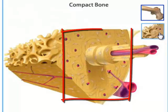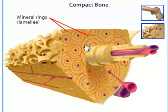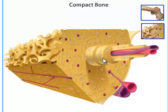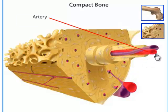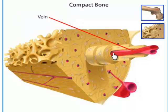Here you can see the compact bone. You have bone cells called osteocytes that make up the compact bone. They sit inside these rings called lamellae. Lamellae are the mineral rings that help calcify and harden the bone to give the compact bone its sturdy structure. Running through the middle of these lamellae are Haversian canals — little entryways for blood vessels to enter. Through the arteries that travel through these canals, oxygenated blood, nutrients, and water travel to the bone cells. The bone cells release their wastes through the veins, which bring the blood back to the heart.